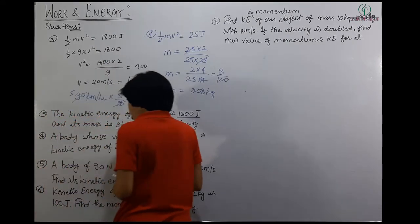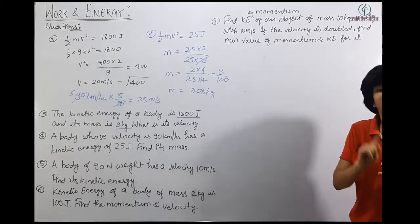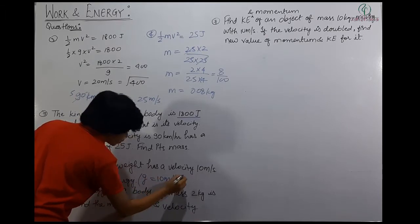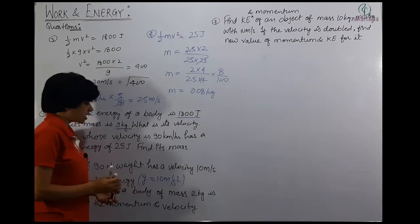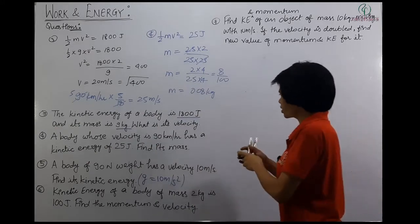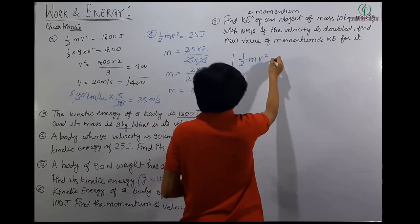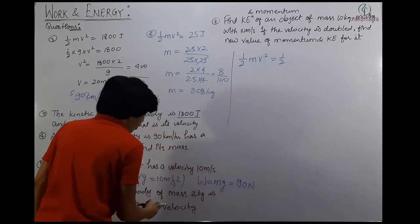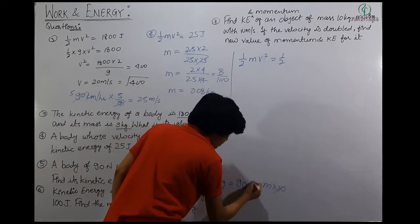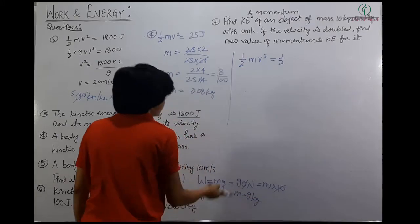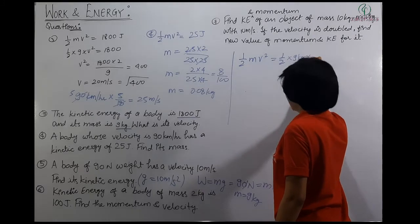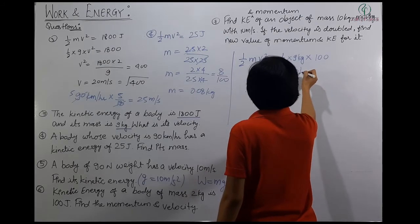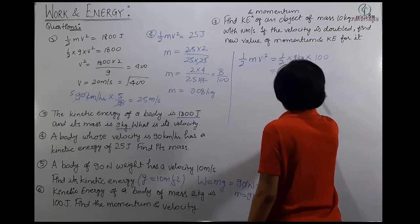Question 5: a body of 90 newton weight has a velocity of 10 meter per second — find its kinetic energy. Mass is not directly given, but weight is given. Taking g = 10 m/s², weight = mg = 90 newton, so m = 9 kg. Kinetic energy = half into 9 into 10² = half into 9 into 100 = 450 joule.